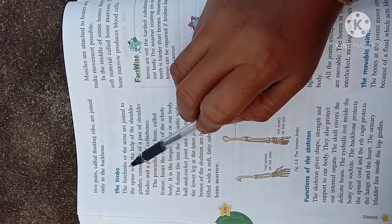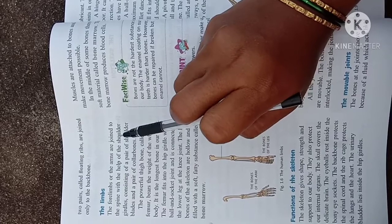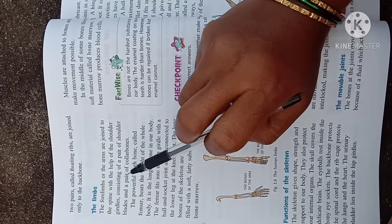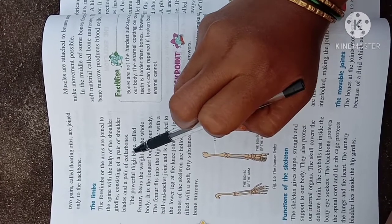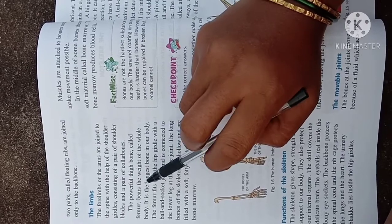Next, the limbs. The forelimbs or the arms are joined to the spine with the help of the shoulder girdle consisting of a pair of shoulder blades and a pair of collar bones. The powerful thigh bone called femur bears the weight of the whole body. It is the longest bone in our body.